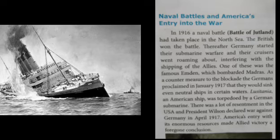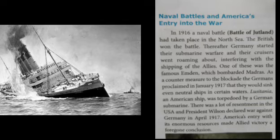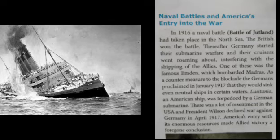Germany started submarine warfare, disturbing the Allies. The Germans proclaimed in January 1917 that they would sink even neutral ships in certain waters. The American ship Lusitania was torpedoed — sunk by a German submarine. More than 100 Americans died. There was a lot of resentment in the US. American President Woodrow Wilson got angry and declared war against Germany in April 1917.